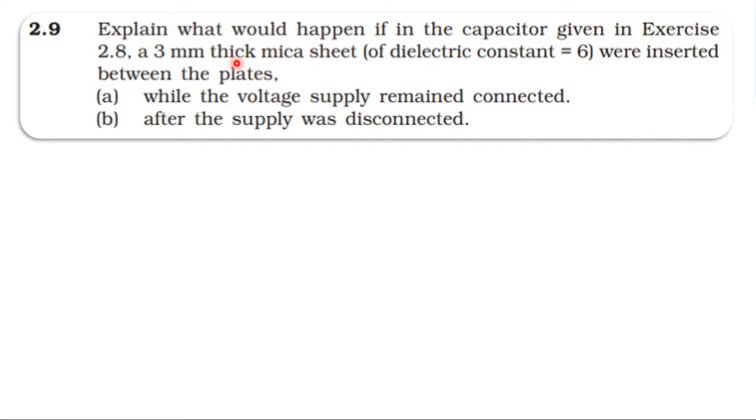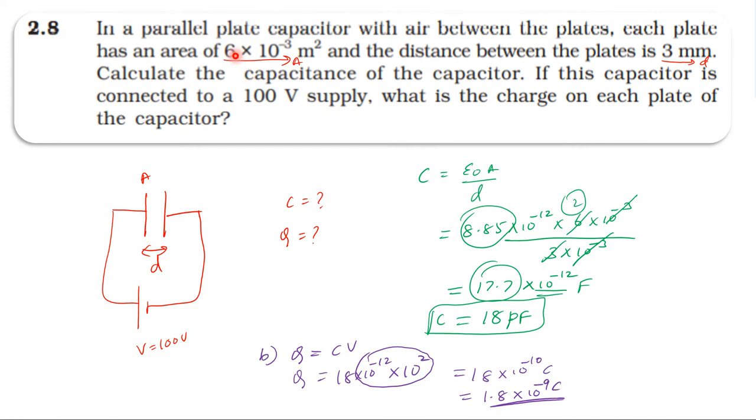A 3 mm thick mica sheet of dielectric constant 6 were inserted between the plates. Part (a): while the voltage supply remains connected. Part (b): after the supply was disconnected.